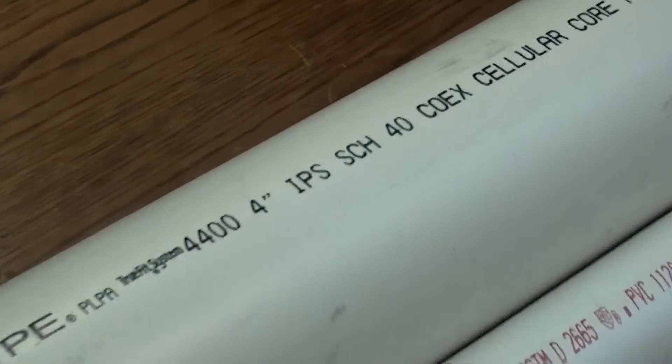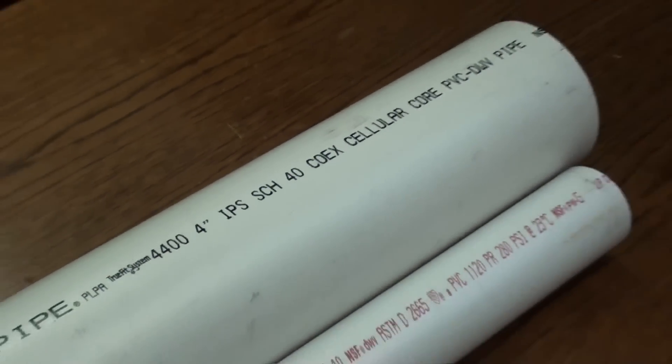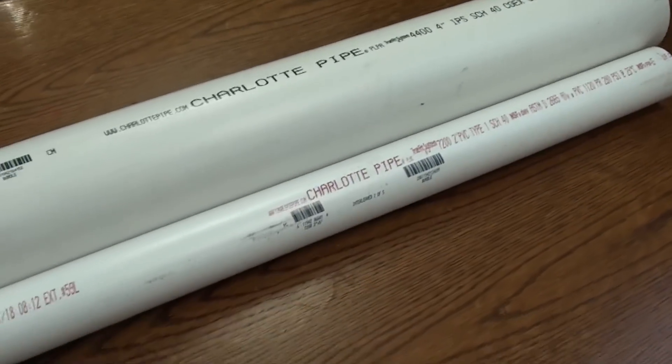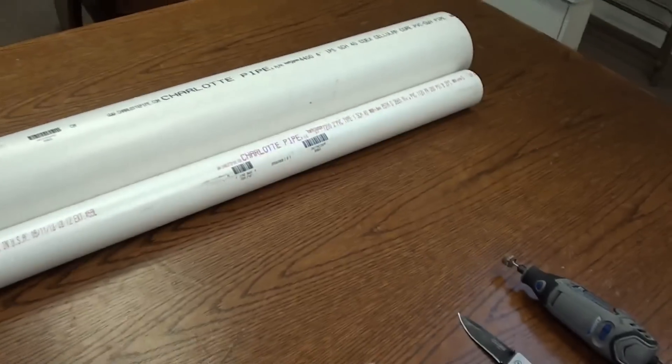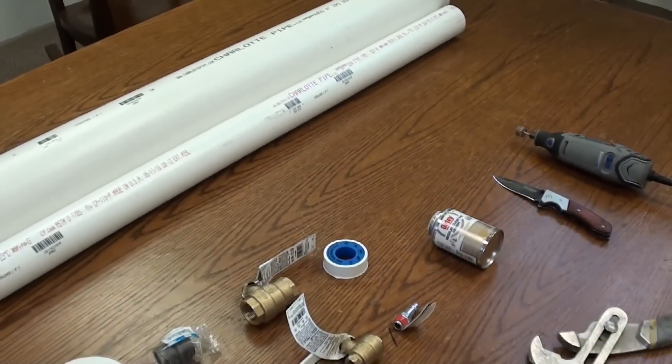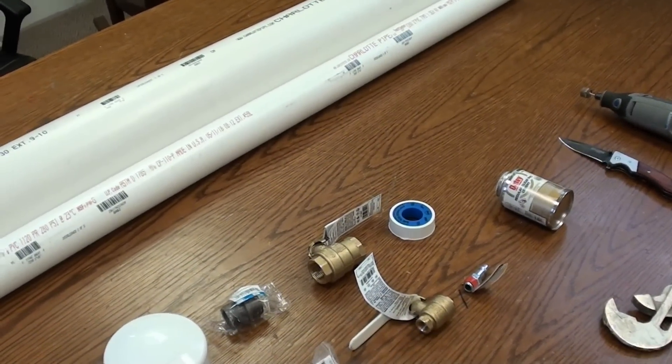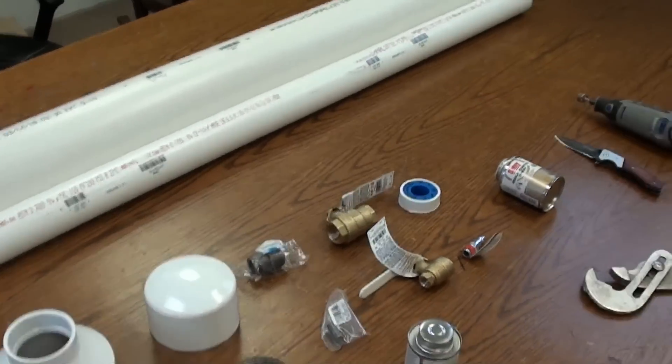So you can buy five-foot sections of, make sure you have schedule 40 PVC. You need a four-inch and a two-inch pipe. You can get the five-foot ones. Six-foot works really well too, but this way you don't have to cut.